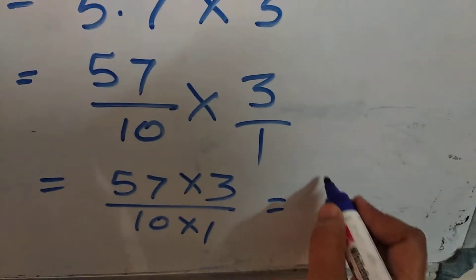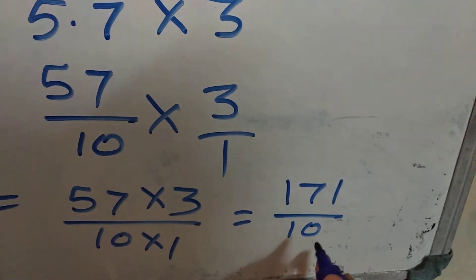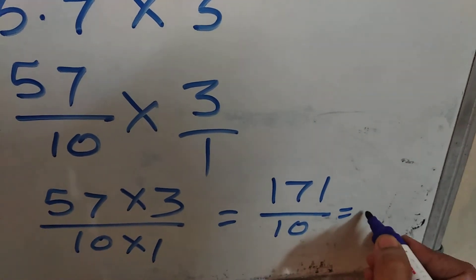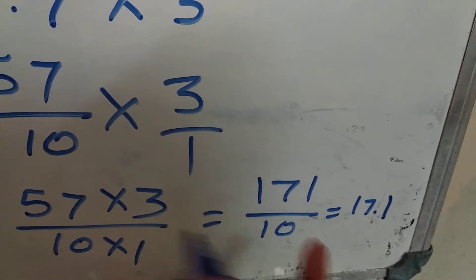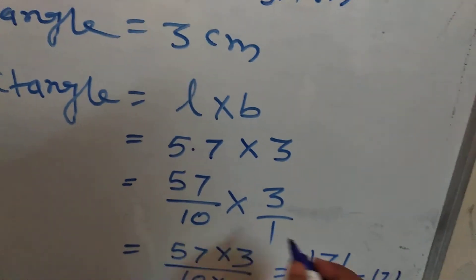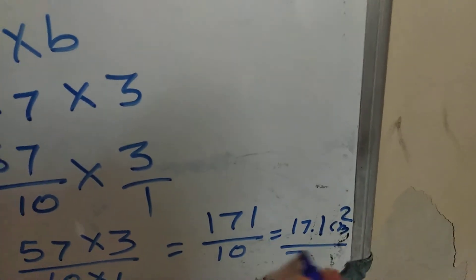it is coming 171 upon 10 into 1, 10 and convert this into again decimal. It is coming 17.1 and as it is the area, we have to write the unit of it and it is cm. So, it is coming cm square.